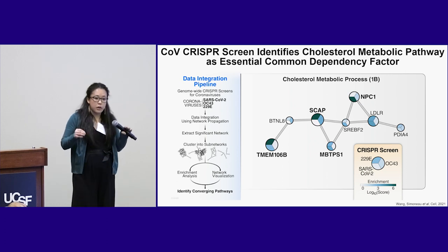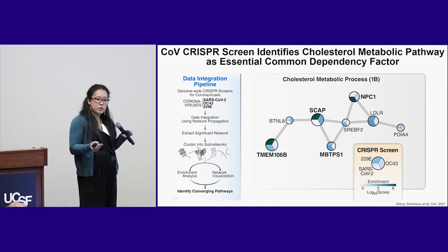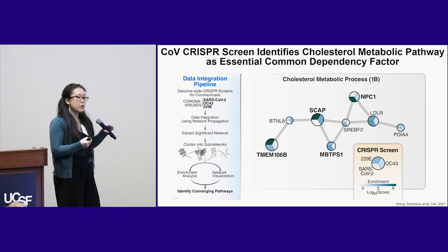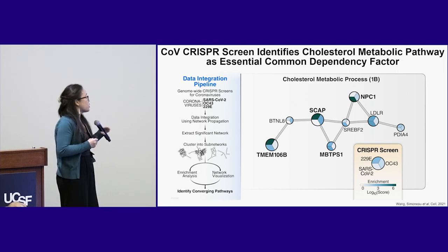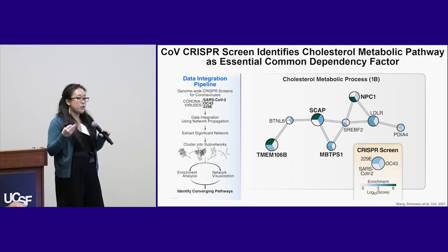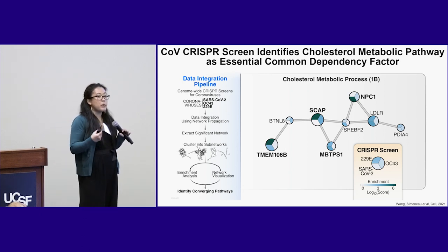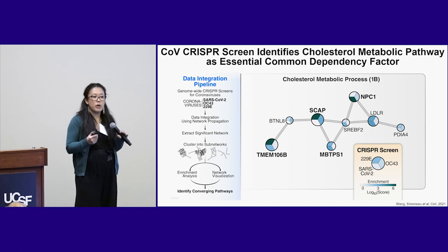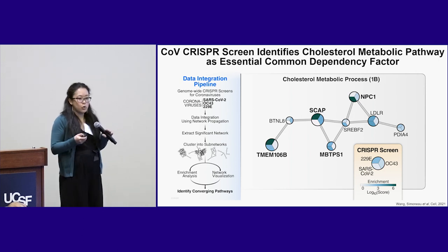We performed confirmatory knockdown studies, and it turns out when you get rid of these genes, you do in fact decrease coronaviral infection. We were interested in the obesity phenotype, so we were looking for a system that more mimicked obesity in a tissue culture setting.